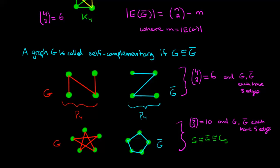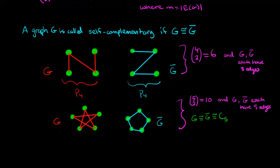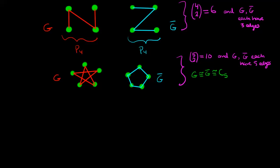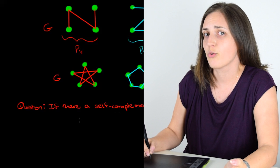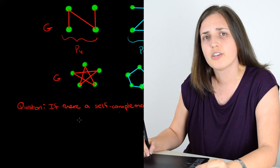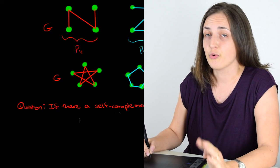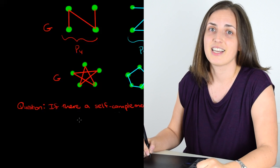So now we've seen an example of a self-complementary graph of order 4 and a self-complementary graph of order 5, and we may wonder if there is a self-complementary graph of order 6. Okay, so think about this question for a minute and see if you can draw such a graph. Now if you want you can pause because now I'm going to tell you the answer.